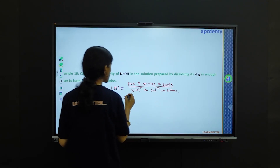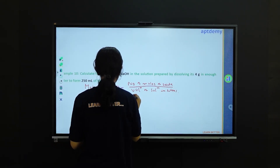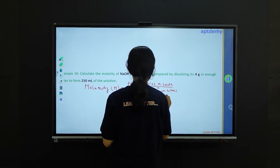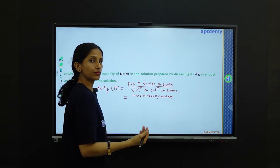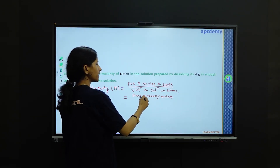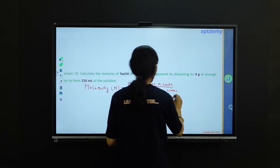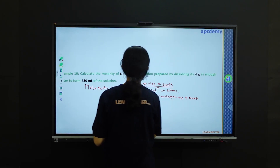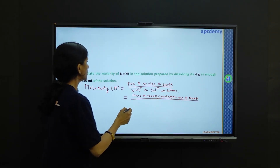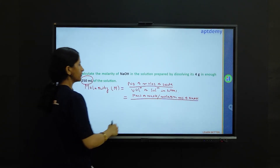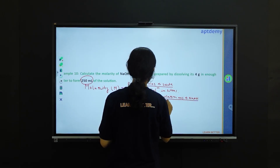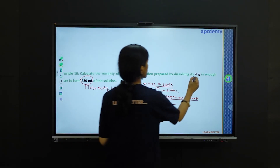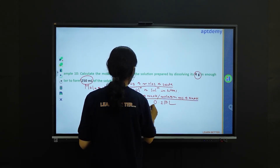The number of moles of solute, sodium hydroxide, can be written as mass of sodium hydroxide divided by its molar mass. The volume is given as 250 ml, which converts to 0.250 liters. The mass of sodium hydroxide is given as 4 grams.